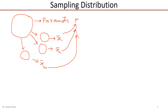The distribution of all these sample means can be demonstrated, and that distribution of sample means is referred to as sampling distribution. We are going to complete this with a very short population example — suppose a population comprised of three numbers: 1, 2, and 3.